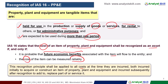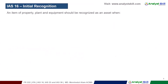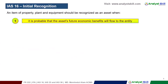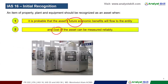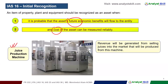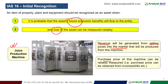The recognition principle shall be applied to all costs at the time they are incurred. When talking about the cost of the asset and its initial recognition, the future economic benefit and cost of the asset must be measured reliably. For example, a factory machine — a juice production machine — must be a revenue-generating machine. From selling juices into the market, this machine produces and generates revenue. And the purchase price is reliably measured from the invoice or bills.